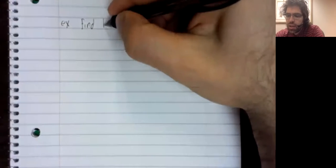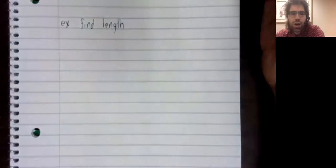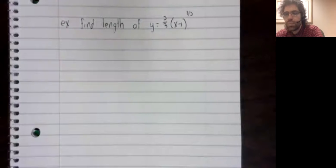we'd need to have an x outside of the square root, which we do not. Presenting an example where we can compute the integral is done almost against my better judgment. It's so artificial. But let's find the length of y equals 2 thirds x minus 1 to the 3 halves power